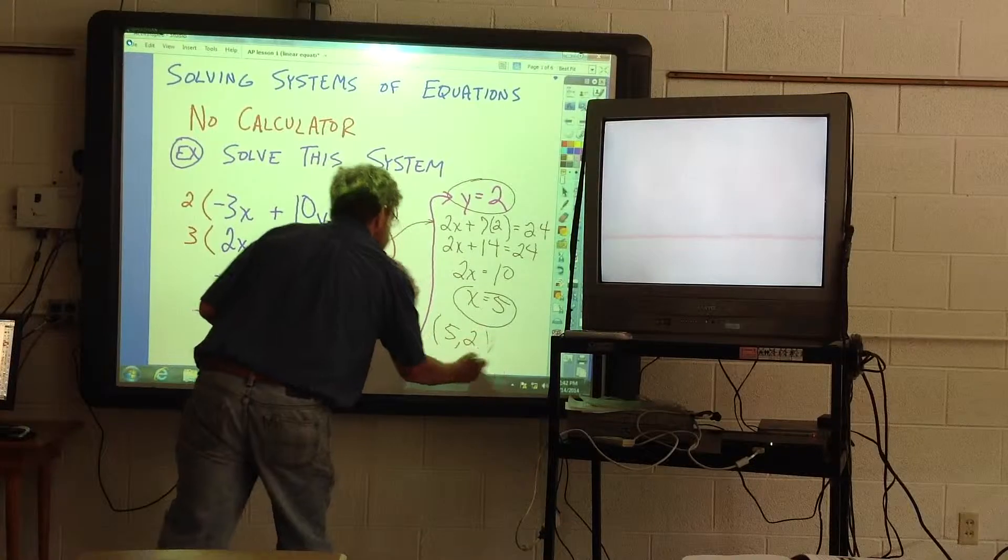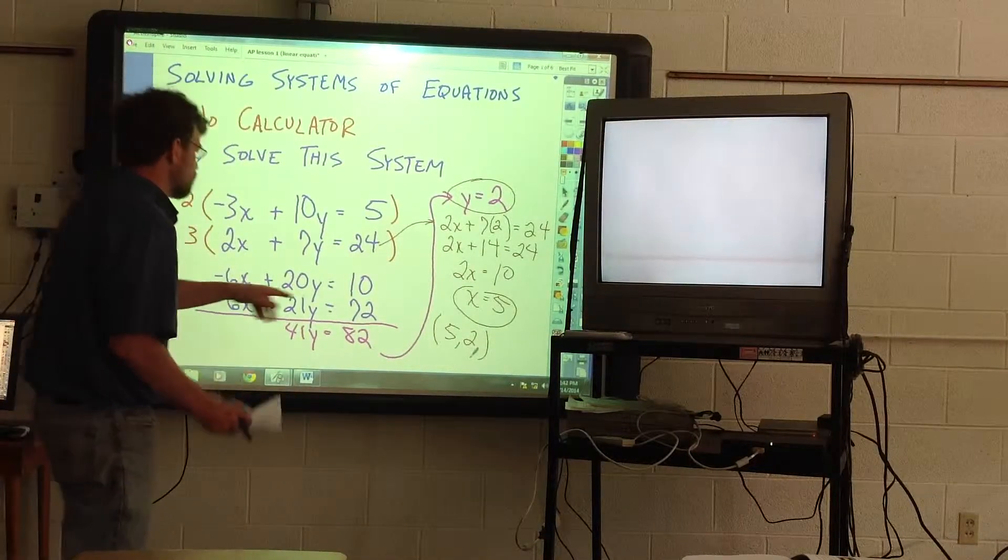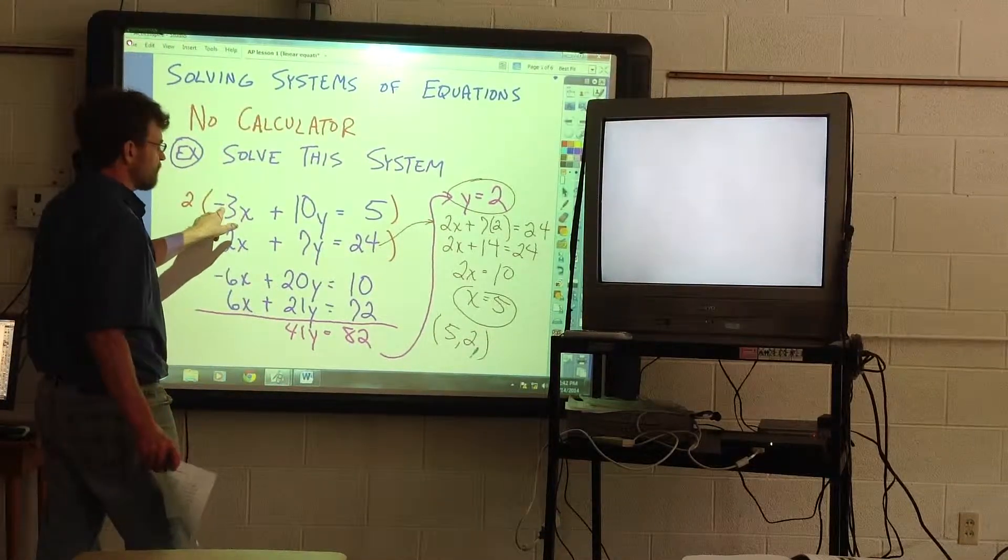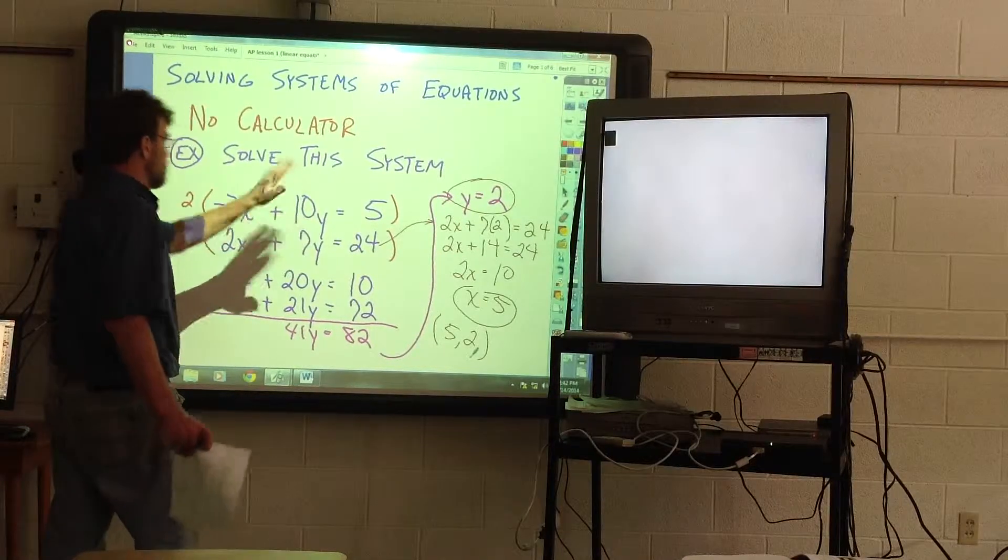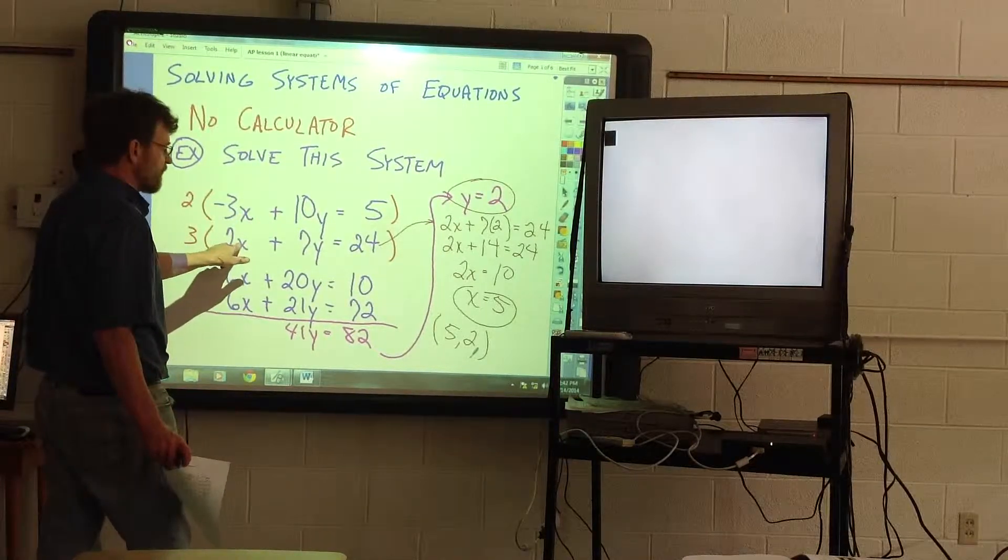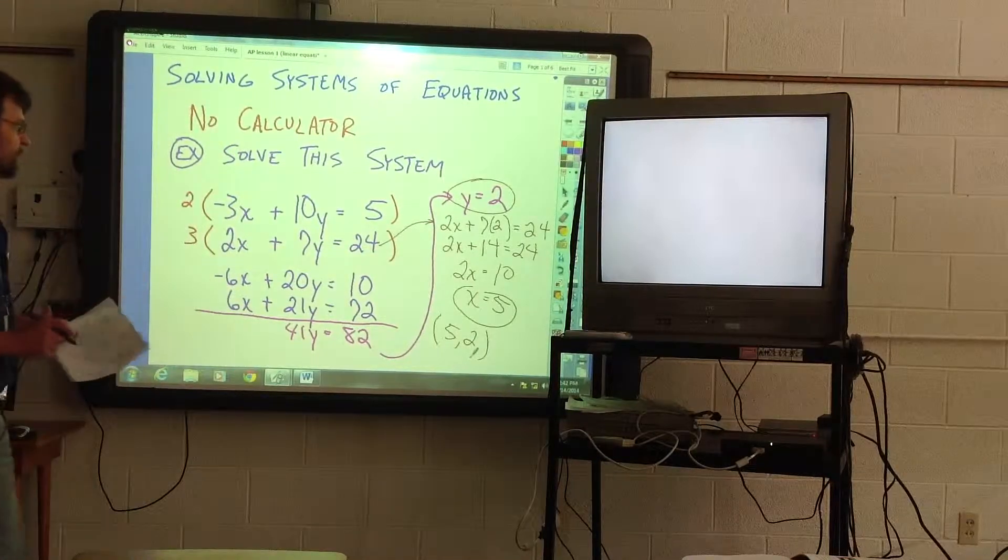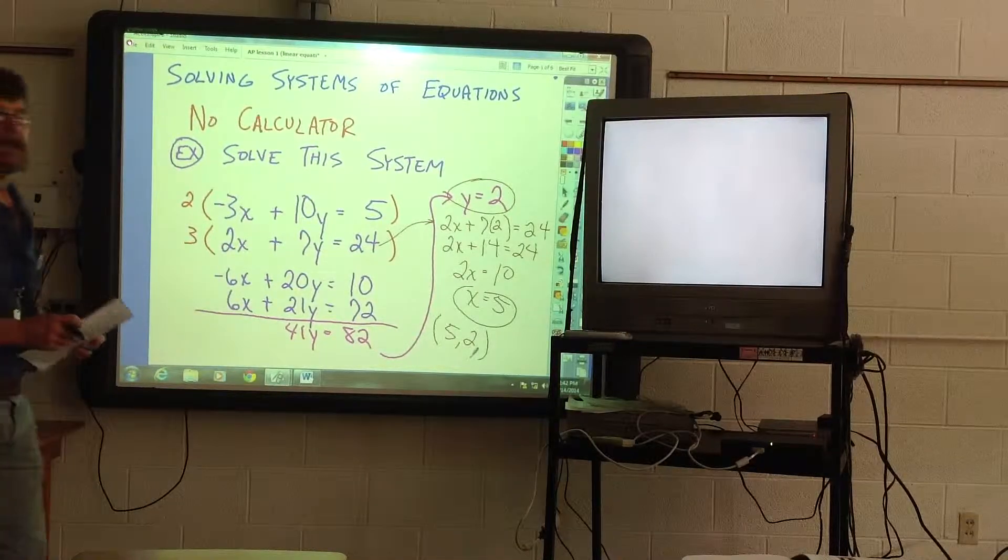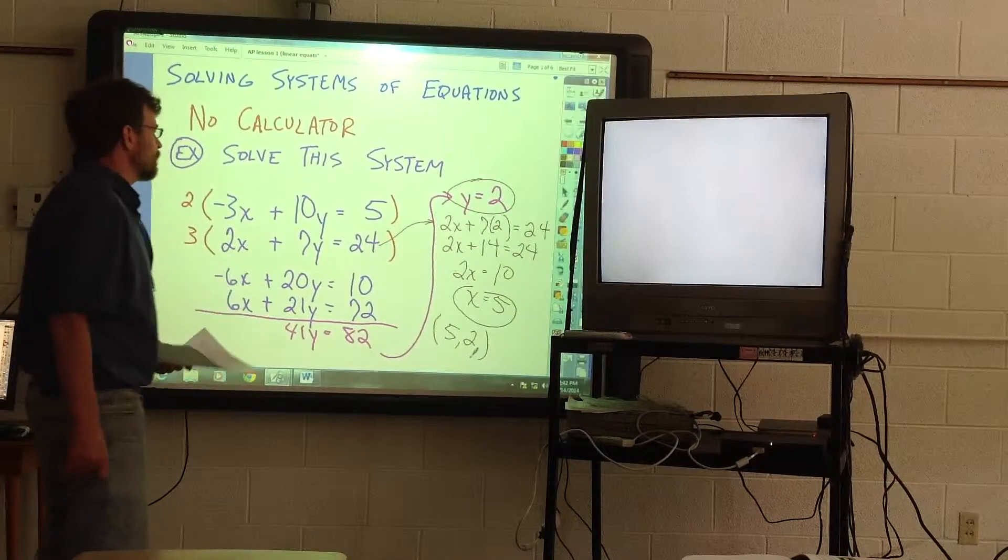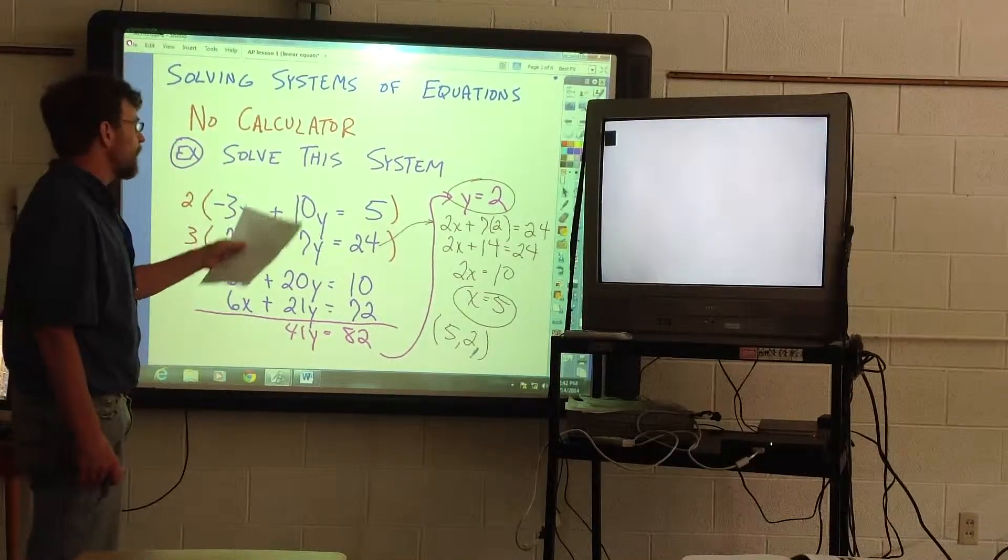And you might want to check by plugging in, just to make sure that negative 3 times 5 is negative 15 plus 25. 2 times 5 is 10, 7 times 2 is 14. So that is your solution. And again, you just use whatever method is comfortable.